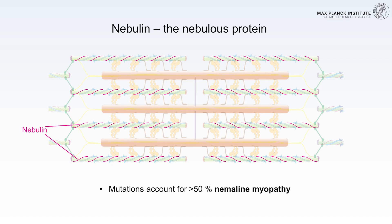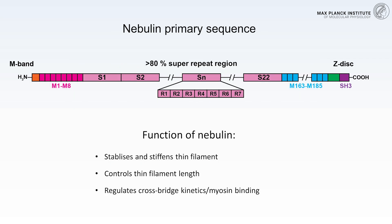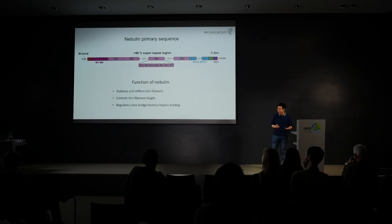Nebulin is crucial for skeletal muscle. Mutations in the nebulin gene account for more than 50% of a skeletal muscle disease called nemaline myopathy. We know this protein's primary sequence, which contains a large number of repeating units. Previous studies have shown that nebulin can stabilize and stiffen the thin filament, control the length of the thin filament, and regulate myosin binding. The question is how — we lack the molecular mechanism because of a lack of structure.